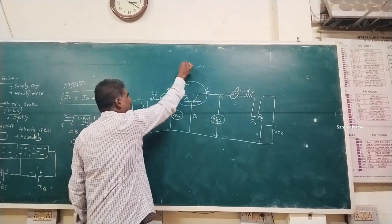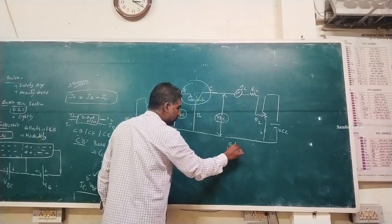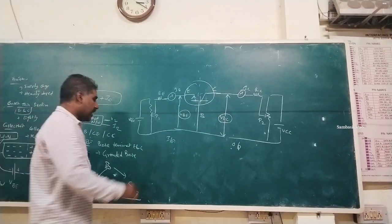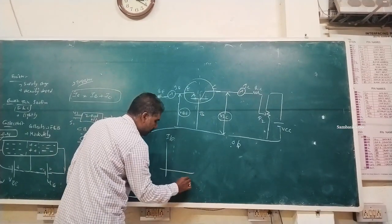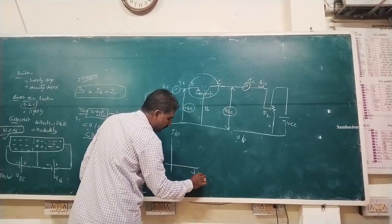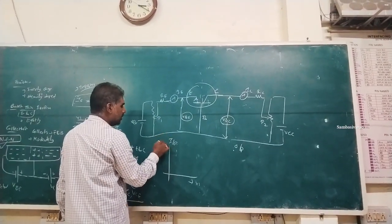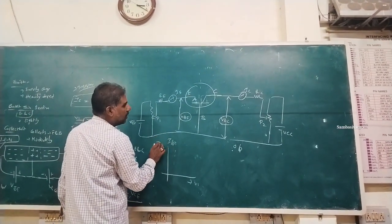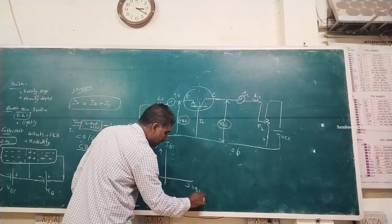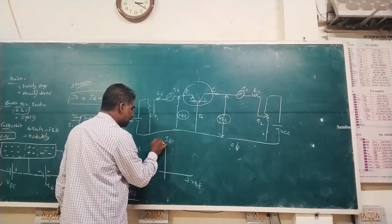The characteristics are divided into two parts: input characteristics and output characteristics. For input characteristics, VCB is kept fixed and we measure base-emitter voltage VBE versus emitter current IE.